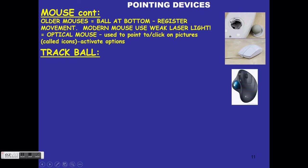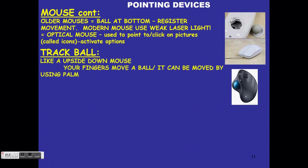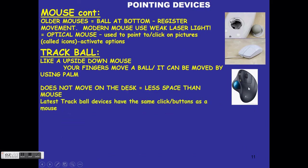A trackball mostly looks like a mouse but is a little different. Where the mouse had the ball on the inside at the bottom, on a trackball the ball is on the outside — it looks like an upside-down mouse. Your fingers or palm move the ball, and rolling it moves the pointer on the screen. You do not move a trackball across the desk like a mouse; it stays mostly in one place.